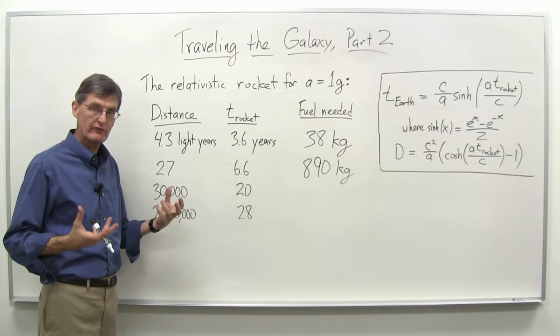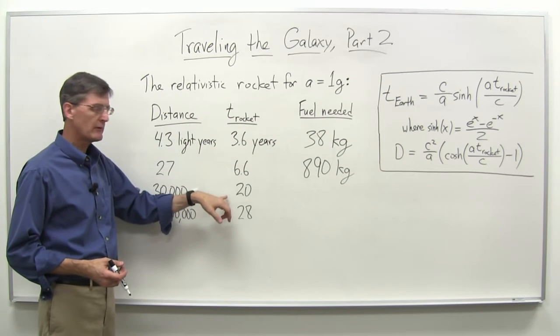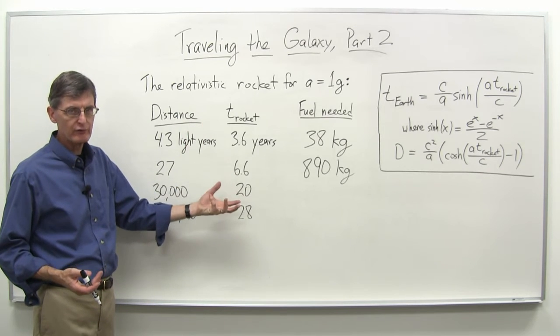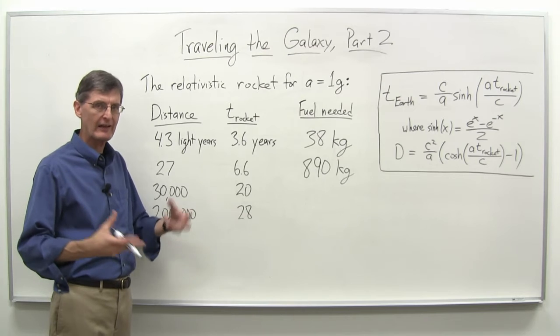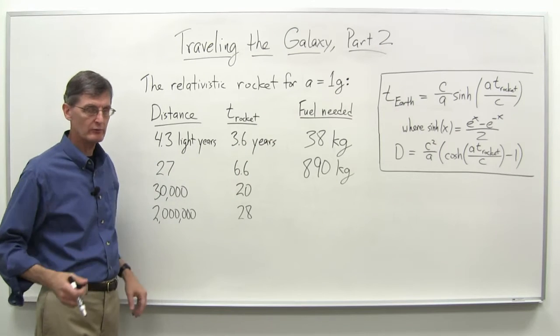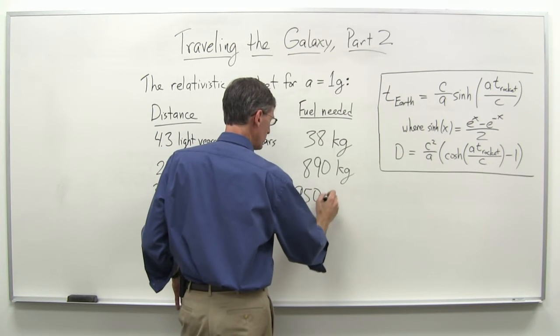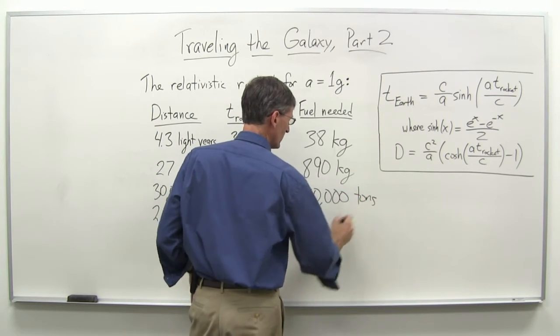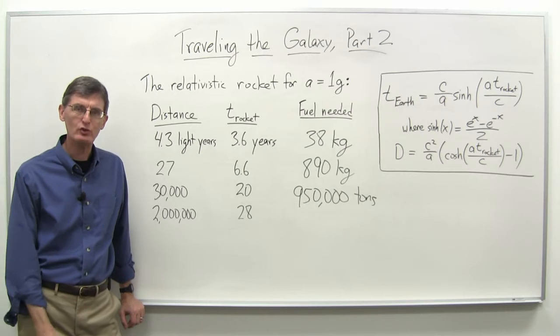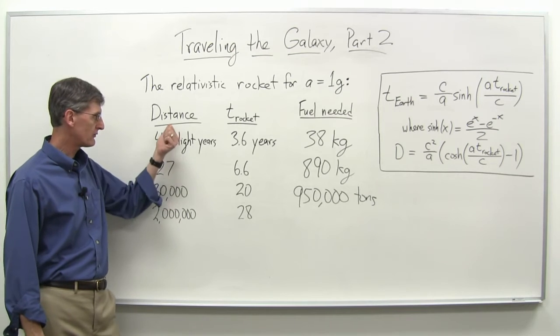What if we wanted to go to the center of the galaxy? That's the example we did before. With 1g acceleration, it'd take about 20 years. Again, not too bad. But now look at the amount of fuel we'd need. Assuming a pure matter-antimatter rocket engine that was 100% efficient at turning all our fuel into pure energy that could propel the rocket, it comes out to be about 950,000 tons of material. That's huge. To even get that amount together and actually build a ship that could contain it.